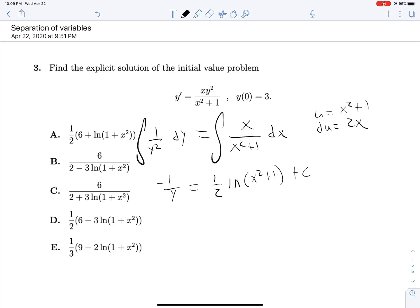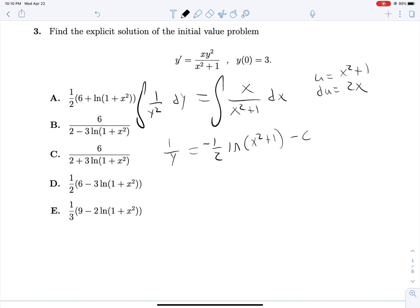So we can rearrange some things here. Let's multiply both sides by negative 1. So from this point, we can solve for c, plugging in this initial condition here. So 1 over 3 is equal to negative 1 half times the natural log of 1, so that's 0 minus c. So c is equal to negative 1 third. So this will become plus 1 third there. So at this point, we can flip both sides and see that y is equal to 1 over negative 1 half ln x squared plus 1 plus 1 third. And we can change this to a 6 on the top, 3 here, and a 2 here, and that gives us answer b, which is correct.